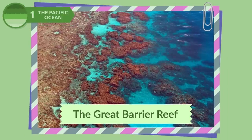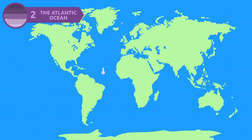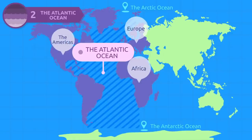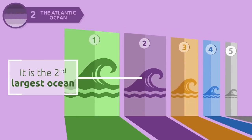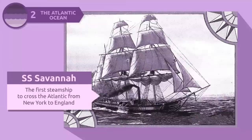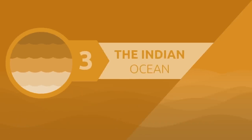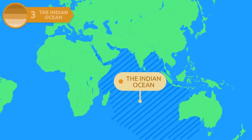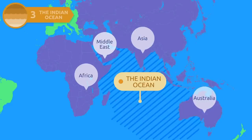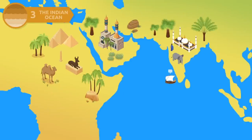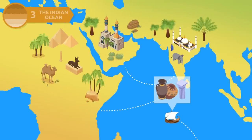Did you know the Great Barrier Reef is also located in the Pacific Ocean? The Atlantic Ocean stretches from the Arctic Ocean to the Antarctic Ocean, bounded on the west by the Americas and on the east by Europe and Africa — it is the second largest ocean on our planet. The first steamship to cross the Atlantic from New York to England was the SS Savannah in 1838. The Indian Ocean is bounded by Africa and the Middle East, and on the south by Asia and Australia. It is the third largest and warmest ocean on the planet, and historically became an important throughway for east–west commerce.